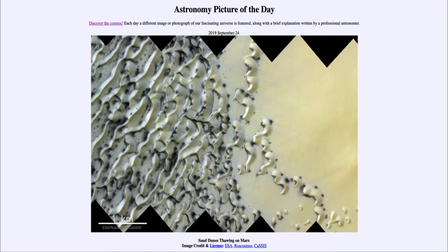That's actually what happens with both carbon dioxide and water on Mars. The water ice will go directly from the solid into the gaseous state without going through the liquid state, because the atmospheric pressure on Mars is insufficient for liquid to be able to exist. So on Mars, both water ice and carbon dioxide ice would be forms of dry ice.